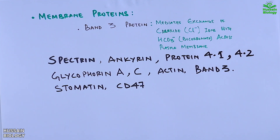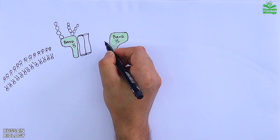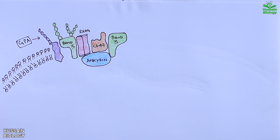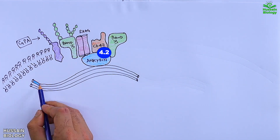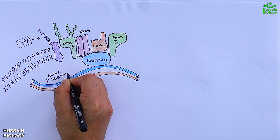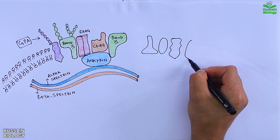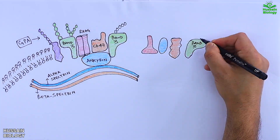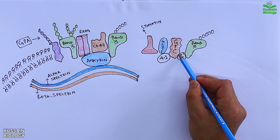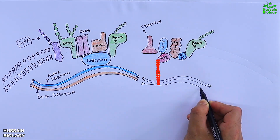Now let's visualize these proteins in the RBC membrane and how they interact with each other. In this diagram we have the RBC cell membrane showing band 3 protein, Rh protein, CD47, glycophorin A, ankyrin protein, and protein 4.2 interacting with ankyrin and band 3 protein. On the intracellular side, we have spectrin protein chains: alpha-spectrin in blue and beta-spectrin in orange. Alpha-spectrin interacts with ankyrin protein. We also have stomatin, GLUT1, glycophorin C, and protein 4.1, which interacts with both chains of spectrin molecules.